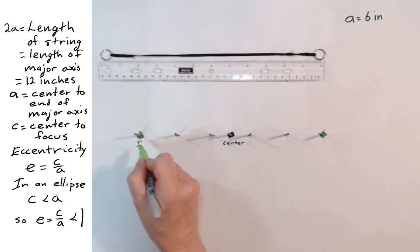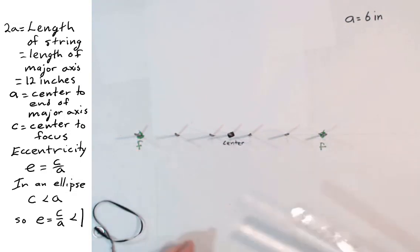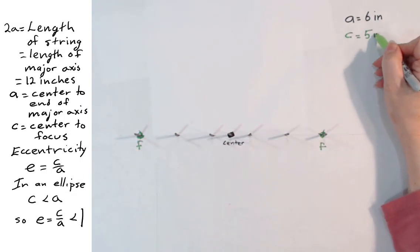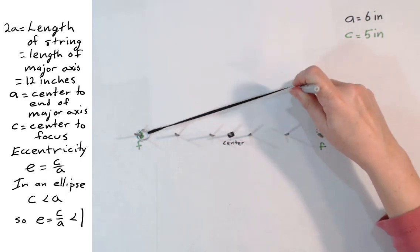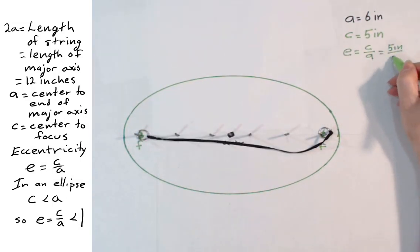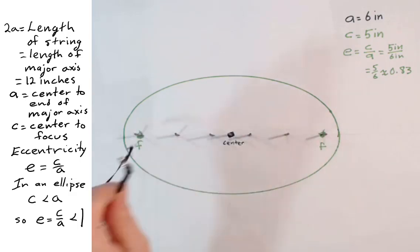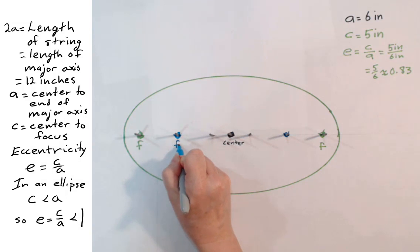We will start with foci each 5 inches from the center, so c equals 5. We can draw an ellipse using these foci. This ellipse has an eccentricity of 5 sixths, which is about 0.83. Note that the inches in the numerator and denominator cancel out, so eccentricity does not have units. Every ellipse with eccentricity 5 sixths has this same shape.